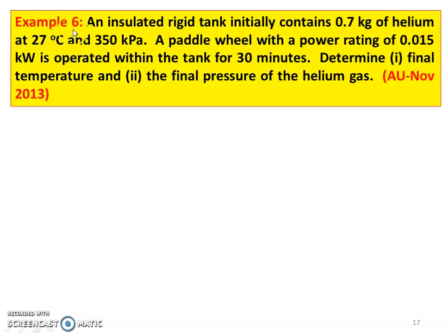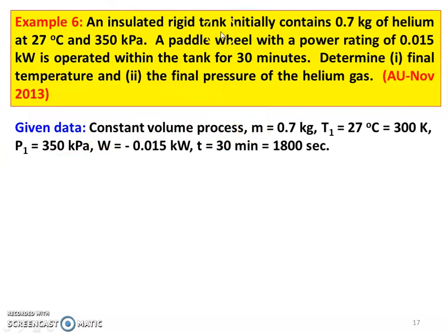Next problem, Example number 6, from the November 2013 question paper. An insulated rigid tank initially contained 0.7 kg of helium at 27 degrees Celsius and 350 kilopascal. A paddle wheel with a power rating of 0.015 kilowatt is operated within the tank for 30 minutes. Determine the final temperature and final pressure of the helium gas.